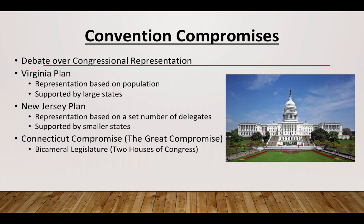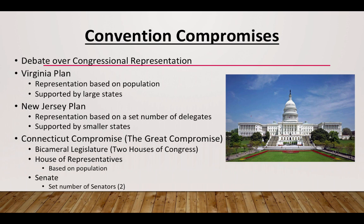Bicameral means a two-house legislature — two houses of Congress, just like a bicycle has two wheels. The House of Representatives is based on population, so larger states have more representatives than smaller states. The Senate has a set, equal number of senators per state — two senators each.